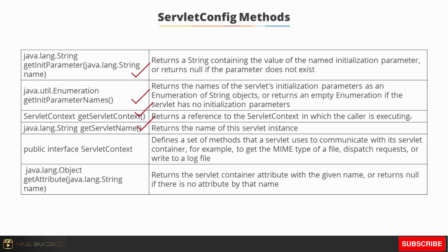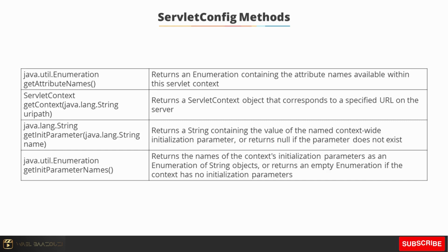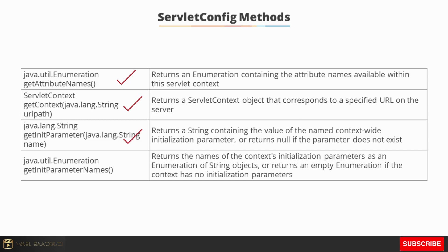The ServletContext interface defines a set of methods that a servlet uses to communicate with its servlet container. These include getAttribute, which returns the servlet container attribute with the given name; getAttributeNames, which returns an enumeration of attribute names available within the servlet context; getContext, which returns a ServletContext object for a specified URL on the server; getInitParameter, which returns the value of the named context-wide initialization parameter; and getInitParameterNames, which returns the names of the context initialization parameters as an enumeration.